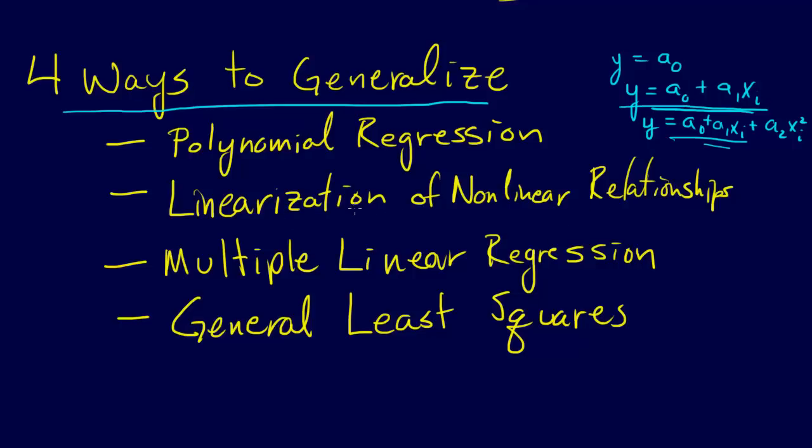The third thing that we can do is multiple linear regression. And so instead of just adding powers here, we can just add other x dimensions. So for example, we might have y equals a naught plus a1 xi, for example. But not just xi,